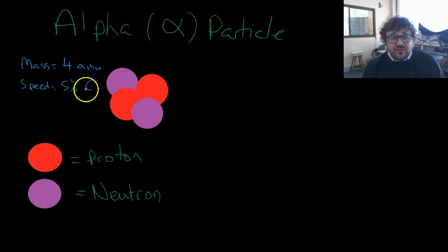We see that it has a mass of four atomic mass units, and that's because it's got two protons and two neutrons. When it moves, it moves at a speed of about 5% of the speed of light. This is the symbol for alpha particle.